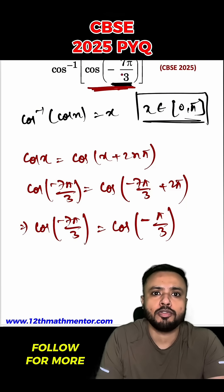Which means this cos of minus 7 pi by 3, I can write it as cos of negative pi by 3.